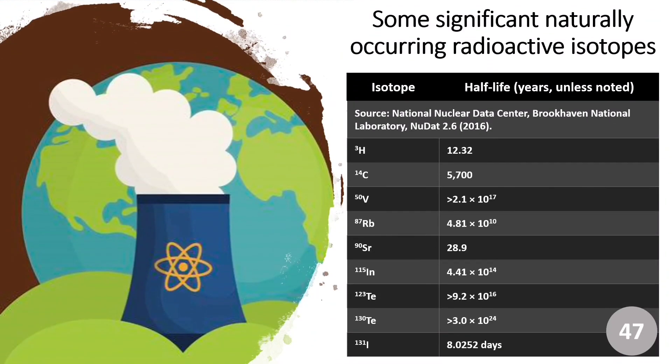These are some naturally occurring radioactive isotopes — for example, tritium, hydrogen's isotope, has a half-life of 12.32 years. Several other elements and their half-lives are also shown.